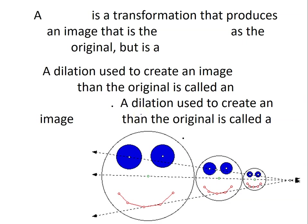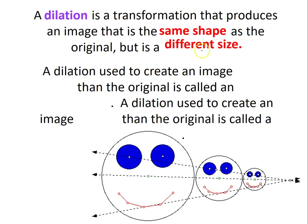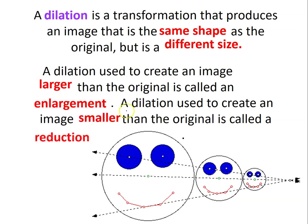Next one is the zoom — it's called dilation. It's a transformation that produces an image that is the same shape as the original but a different size. A dilation used to create an image larger than the original is called enlargement. A dilation to create an image smaller than the original is called reduction. You are going to change only the size of the shape — that is called dilation.